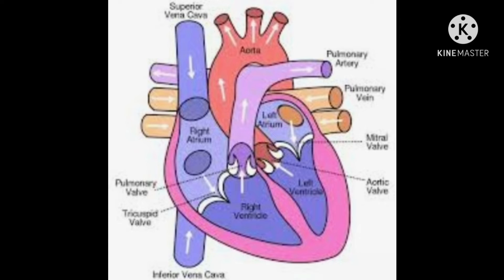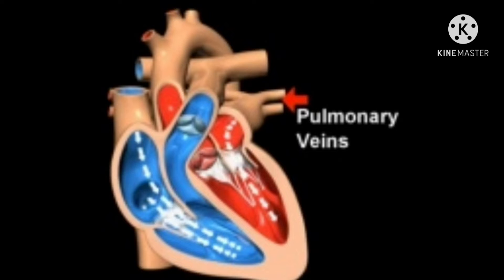The top side of the left atrium is connected to the pulmonary vein, which brings oxygenated blood into it from the lungs. The term pulmonary refers to lungs.